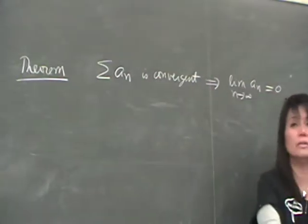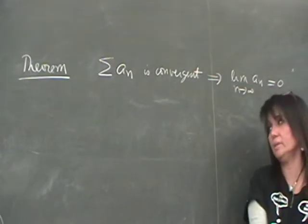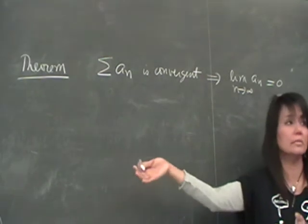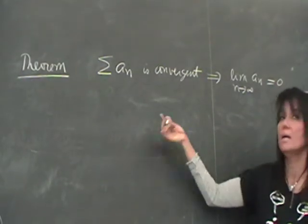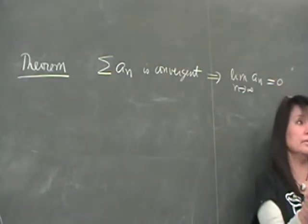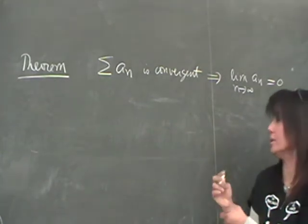This chapter is deciding convergence or divergence, and we've already seen how we can do it for certain series, right? Harmonic and geometric, but not all series will be either harmonic or geometric, so we need more tests.